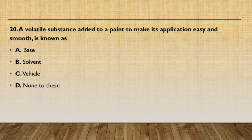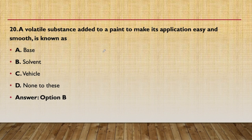20th question: a volatile substance added to paint to make its application easy and smooth is known as a solvent. This is the definition of solvent used in paint — volatile substances that ensure smoothness of application.